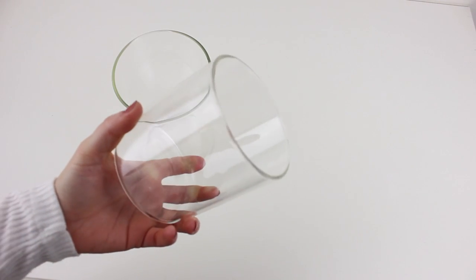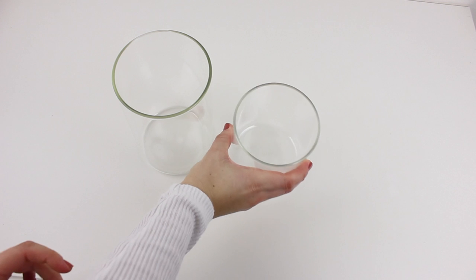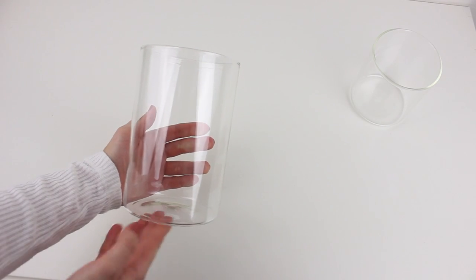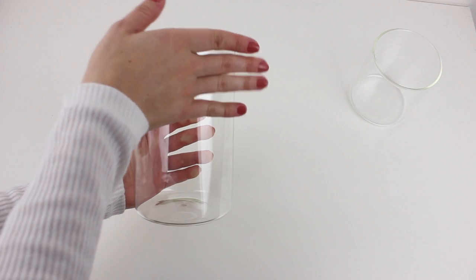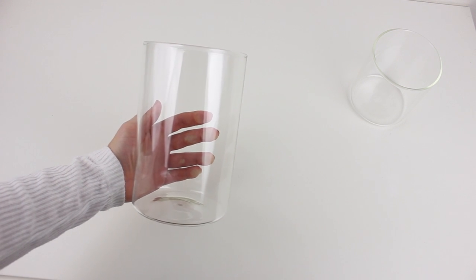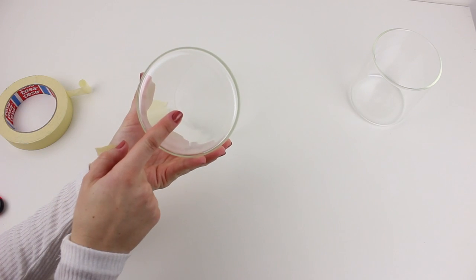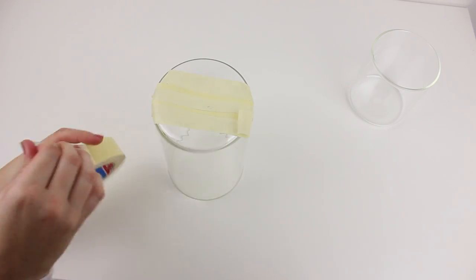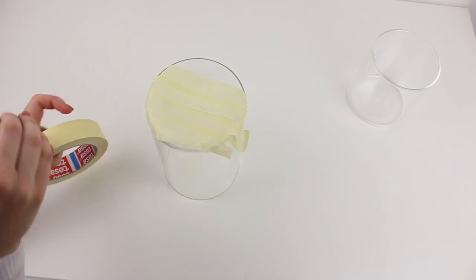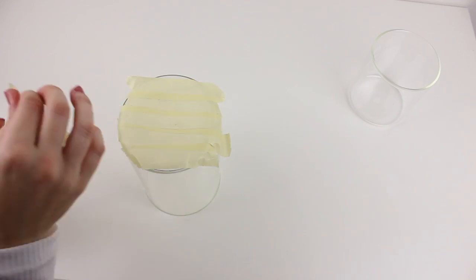Start by removing the jar lids, if the jars have them, because you will not need them. And what we will do is cover the areas we do not want to spray paint. What you leave uncovered is what is going to be metallic. You also don't want to paint the bottom of the jars, because the paint may stain the surface of the table even after it is dry.